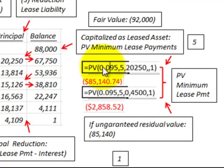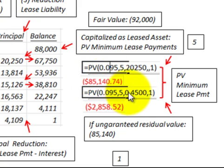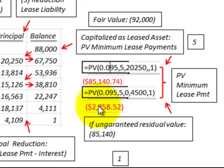The $88,000 capitalized amount breaks down into two parts. First, the present value of the minimum lease payments of $20,250 per year — that's the $22,250 less the $2,000 executory expense — discounted at 9.5% for five years, gives a present value of $85,140. The second component is the guaranteed residual value of $4,500 discounted back five years at 9.5%, giving a present value of $2,858.